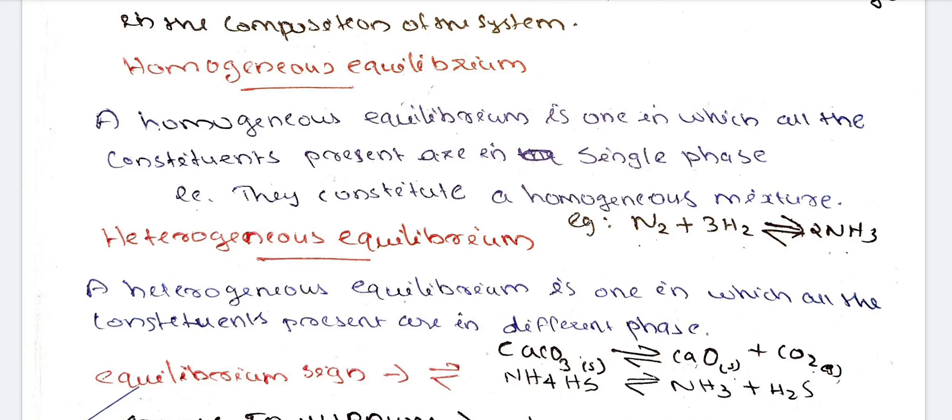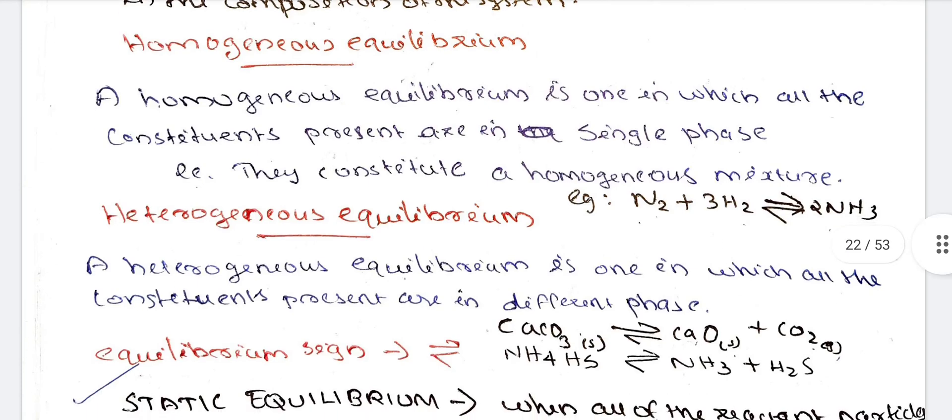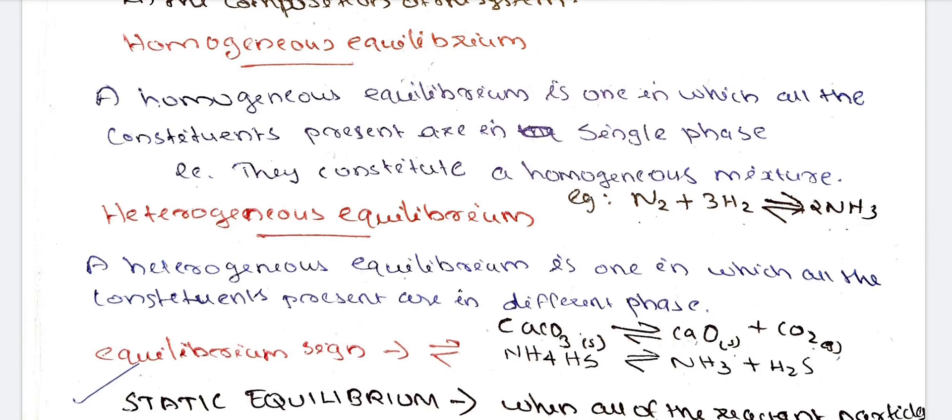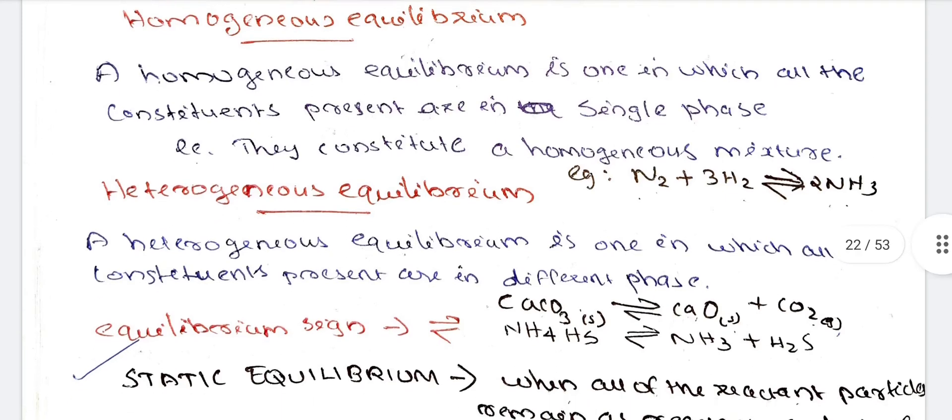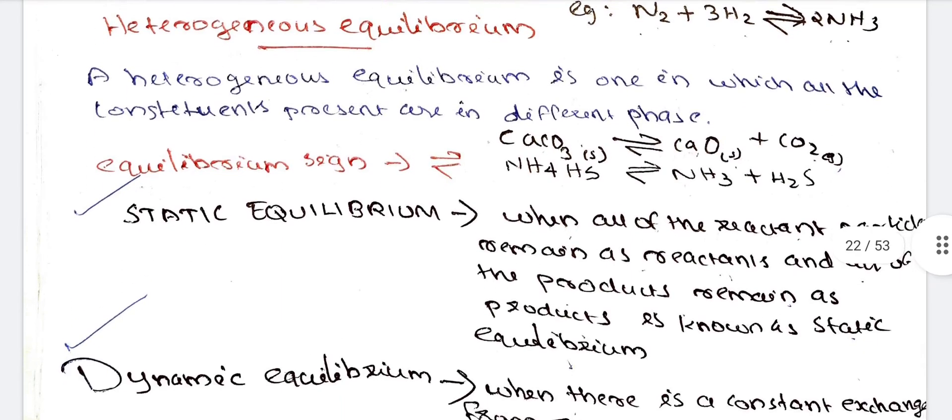What is NH4HS? NH4HS gives NH3 plus H2S. In this case, NH4HS is solid. NH3 is gas, H2S is gas. And then, solid.